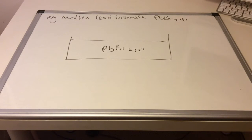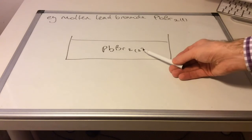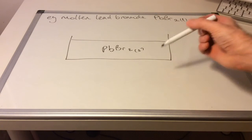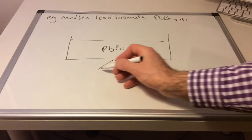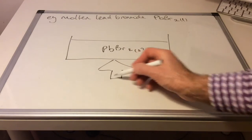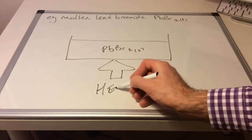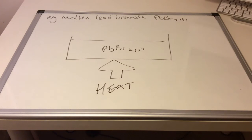So if you just imagine a tank full of solid lead bromide. You can see I've changed the state symbol there to S. And let's imagine that this is heated up to a very high temperature. What's going to happen?